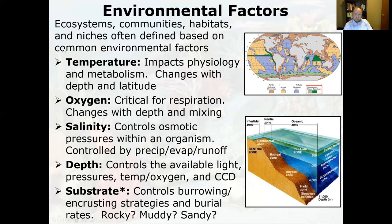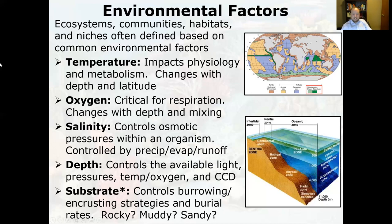For temperature, we can look at the morphology of creatures since we know some patterns that give us a proxy. For oxygen, in some cases we can look at isotopes. For salinity, we can look at chemistry. Depth is very difficult — we can look at sedimentary structures to try to infer it. So when studying paleoecology, getting at these five factors is pretty tricky.